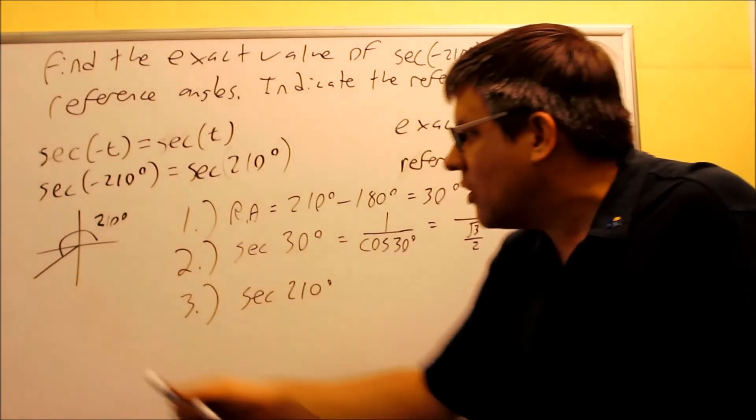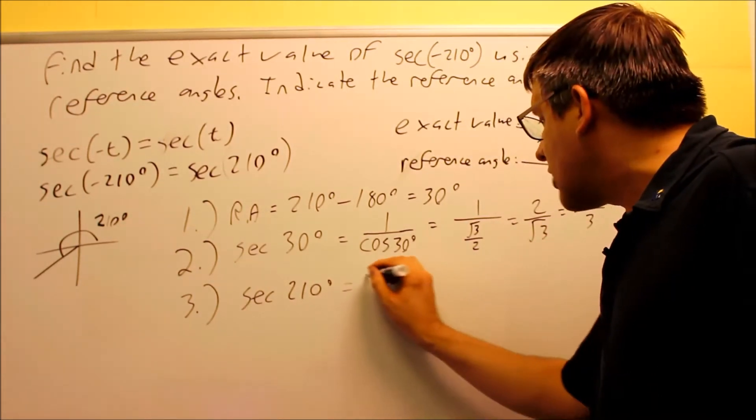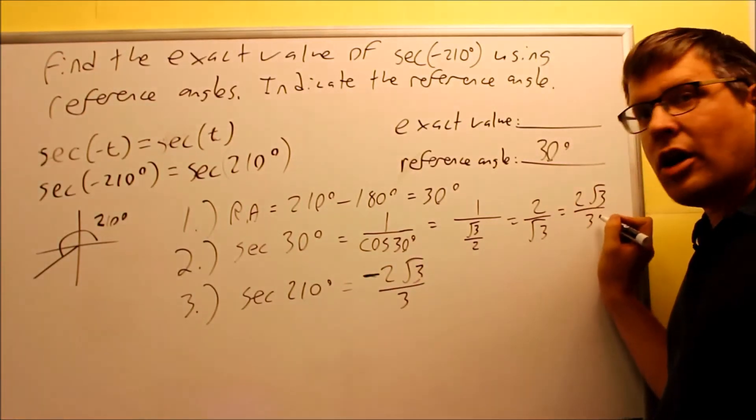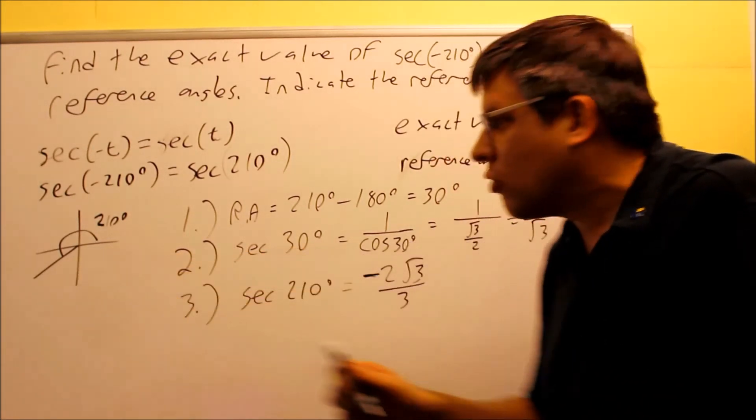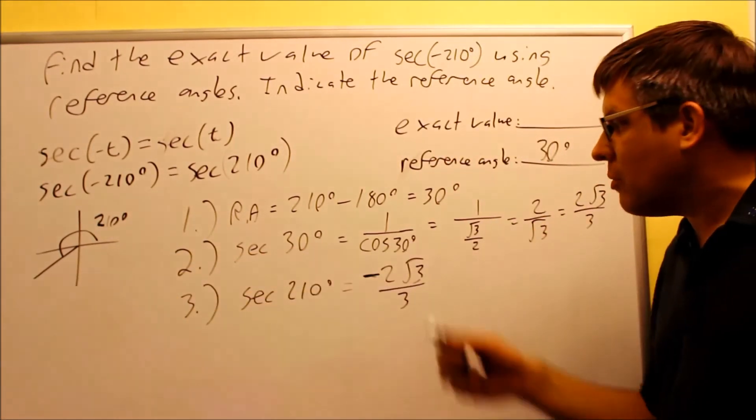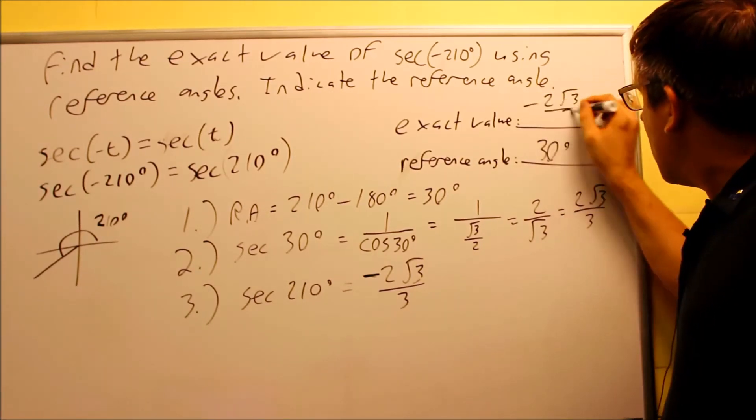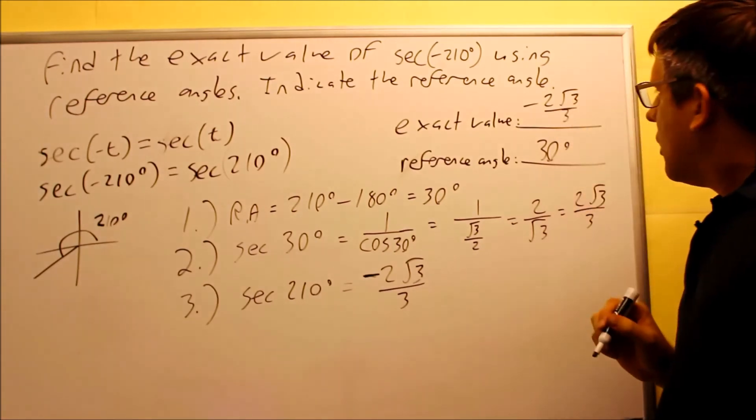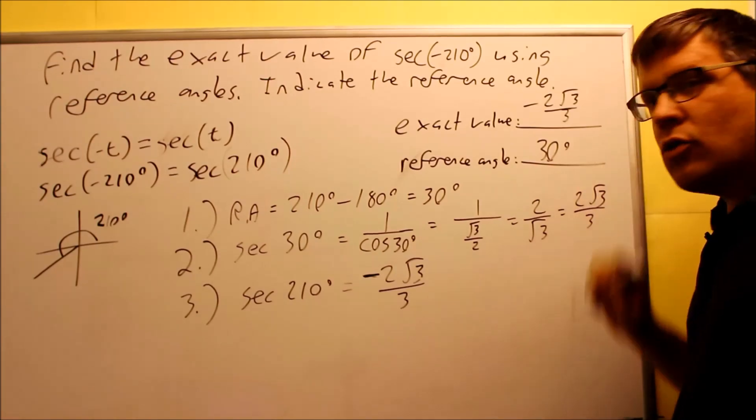If cosine is negative, that means that secant has got to be negative also. So therefore, my final answer is going to be negative 2 square root of 3 over 3. It has the same numerical value as step number 2, but I had to apply negative, only again because it's in the third quadrant. Cosine is negative in the third quadrant. That means that secant is negative. So that completes my problem. Here is my negative 2 square root of 3 over 3. And that completes the problem. I've answered both the exact value and the reference angle.